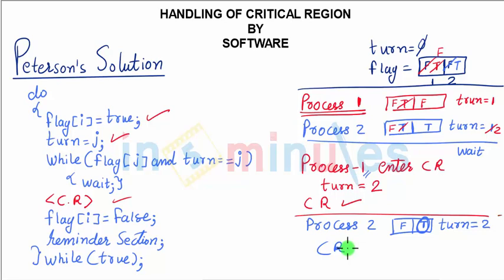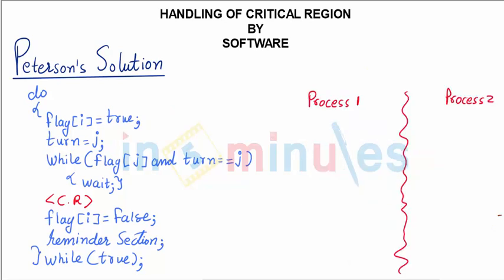In zigzag manner, the system is fairly simple. Process 1 enters, makes its flag true, and turn would be given to 2, enters the critical region, and then control goes to the next process.